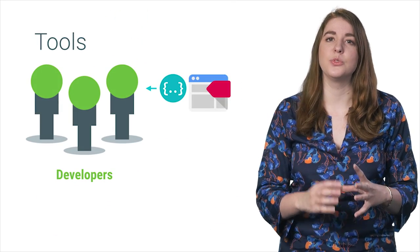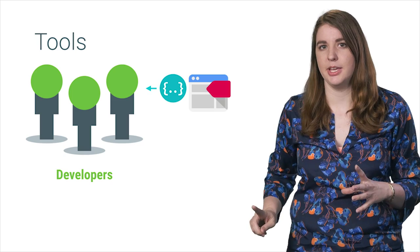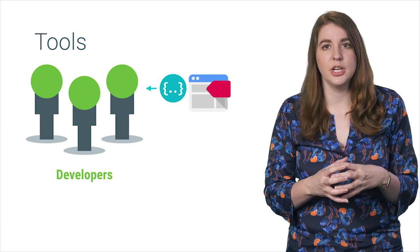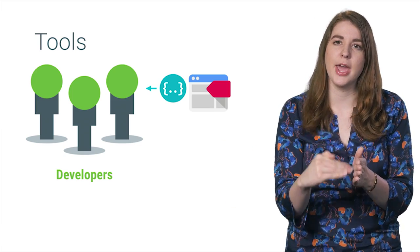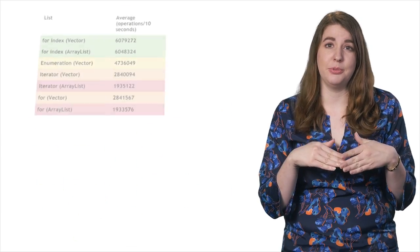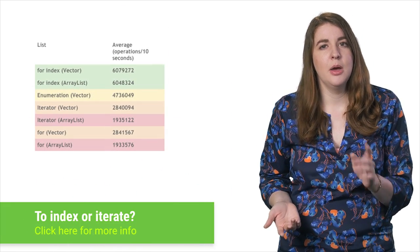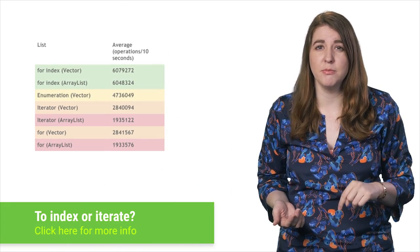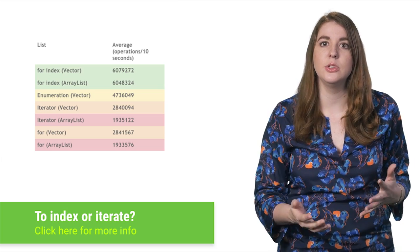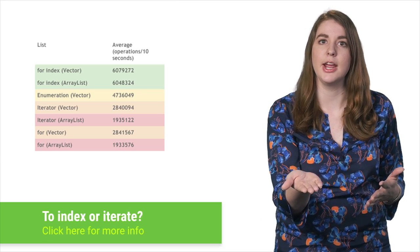This is as simple as running the performance tools on your application and then focusing your energy on fixing the bottlenecks that eat away at your frame rate. For example, iterators may be the slowest way to traverse a list. But if your tools show that this is not a perf problem for your frame rate, then there's no use changing your existing iterator code.